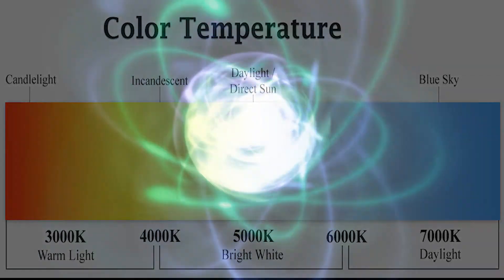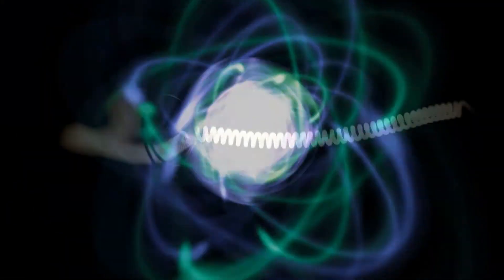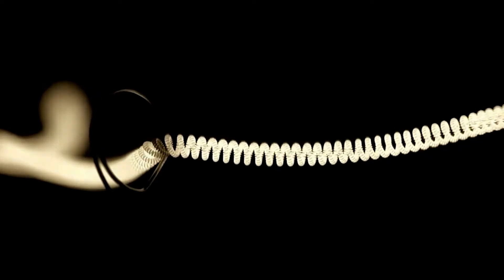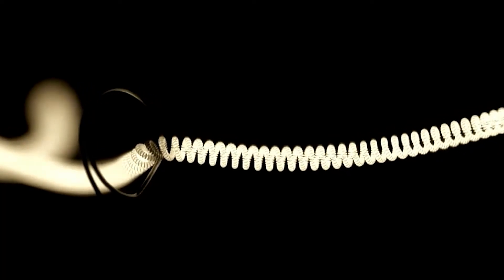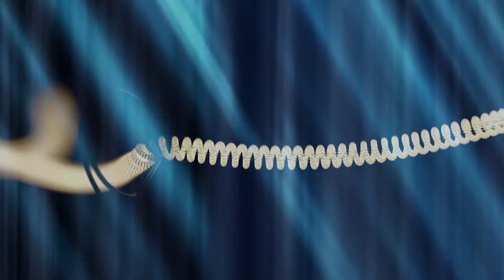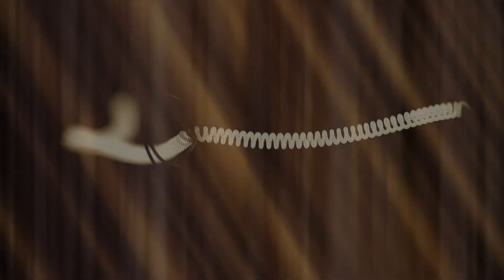The physics behind this color change is fascinating. When the filament gets hotter, the atoms in tungsten vibrate faster, and this higher energy vibration produces bluish white light. On the other hand, when the filament is cooler, the vibrations are slower, creating a softer, yellowish light.